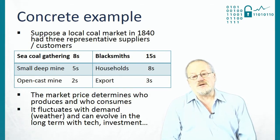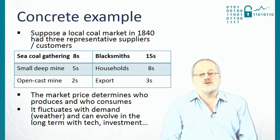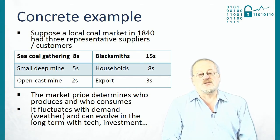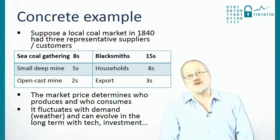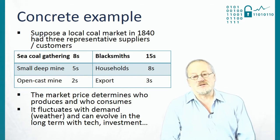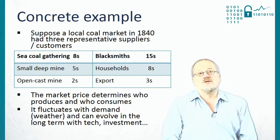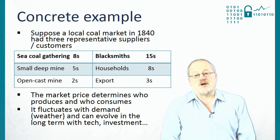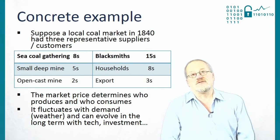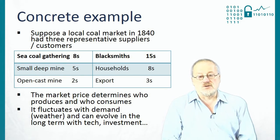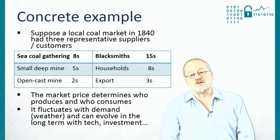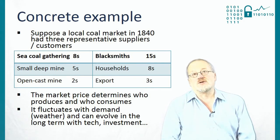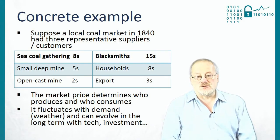On the demand side, you might have three customers for the coal. Merchants who put it on boats and export it to London would only buy it for three shillings a tonne or less. Households using coal for heating in winter might pay a maximum of eight shillings a tonne — beyond that, they'd gather wood. And blacksmiths would be prepared to pay quite a lot, because without coal they couldn't run their forges and couldn't earn a living.